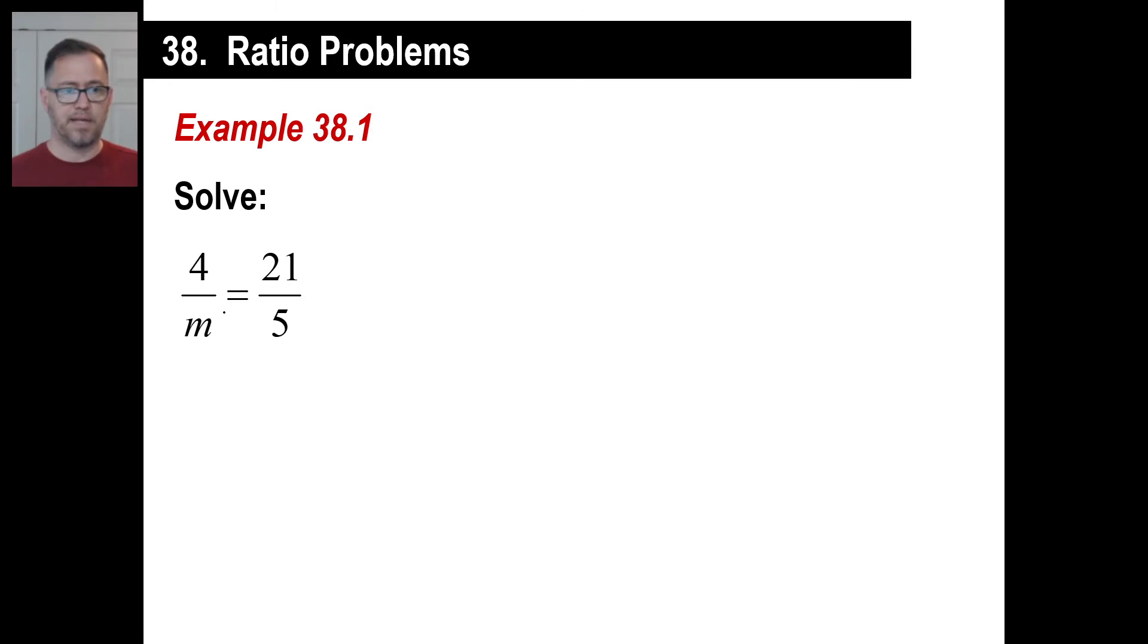Let's do the variable first, so it kind of ends up on the left side. So 21 times m is 21m. And that's going to be equal to 4 times 5, which is 20. Well, there's only one step left. If you saw this in your math book, you'd go, that's easy. So divide by 21. So m is equal to 20 over 21. You can leave it there.